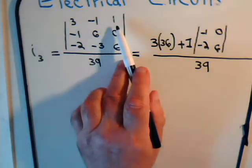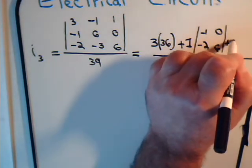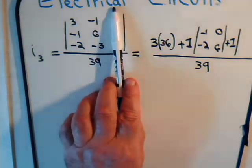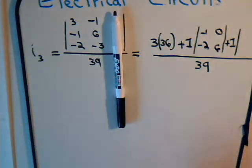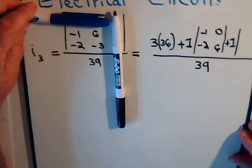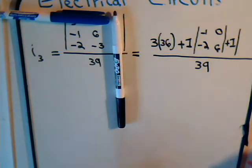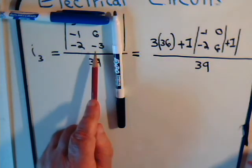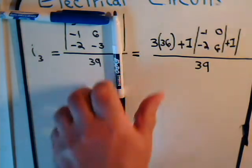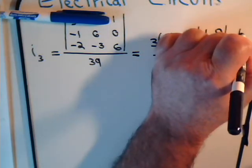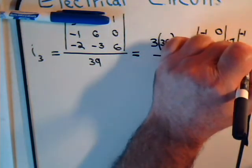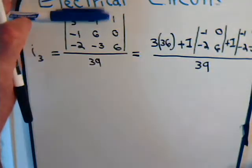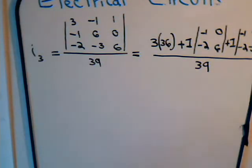Then we have plus this coefficient, 1, times this sub-determinant. Cover up this column, cover up the first row, and we have negative 1, negative 2, 6, negative 3.